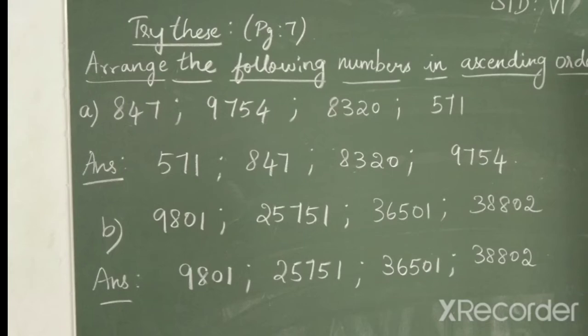So, ascending order means we have to arrange the numbers from small to big. So, the numbers having least number of digits are 571 and 847. So, which is the smaller number? 571, and then comes 847.